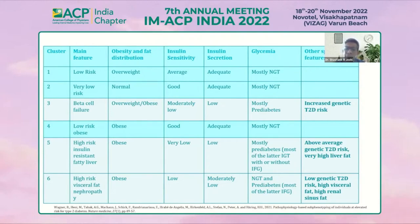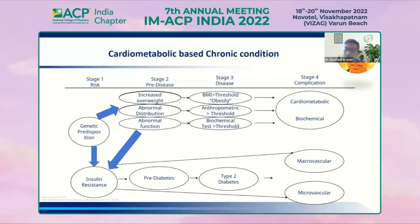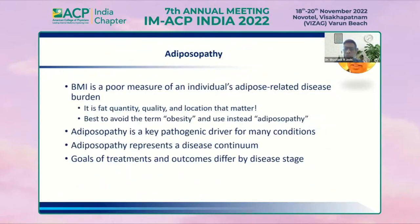When we look at chronic conditions, the first stage is genomic predisposition and family history. The second stage is pre-disease with increased overweight, abnormal fat distribution, abnormal fat function, and biochemical abnormalities like insulin resistance. In the third stage, if BMI is used as a threshold, you get obesity; if anthropometry is used, you get thin fat Indians; if biochemistry is used, you get type 2 diabetes. The fourth stage involves cardiometabolic and biochemical complications, ultimately leading to macro- and microvascular disease.